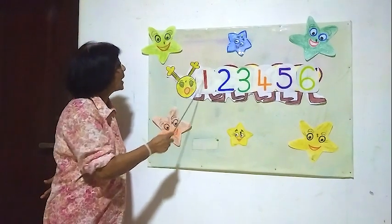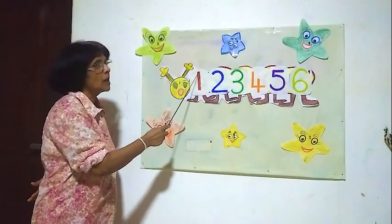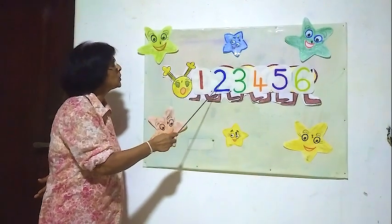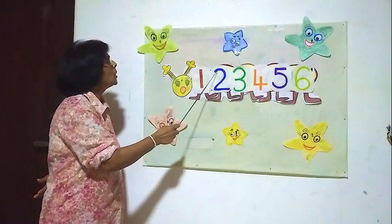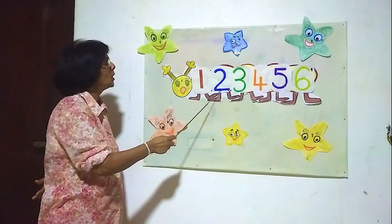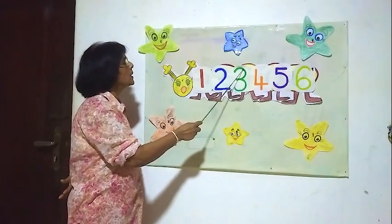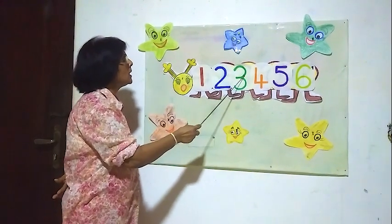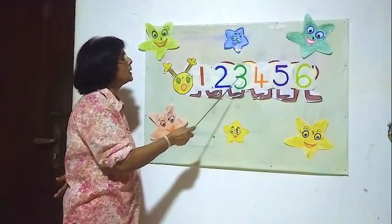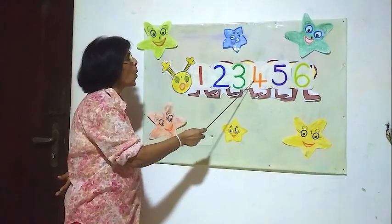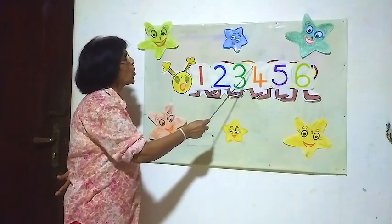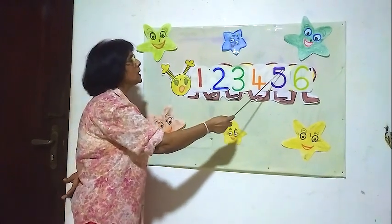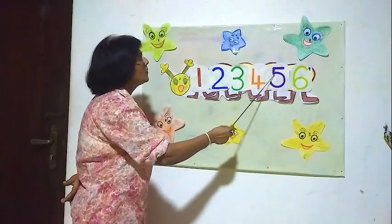Here number one, number one. Here number two. Now here number three, three. Here number four, four.